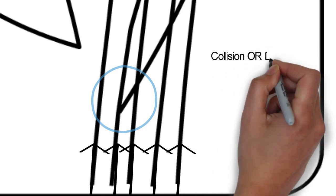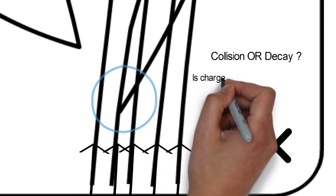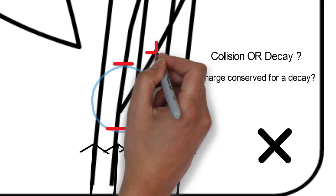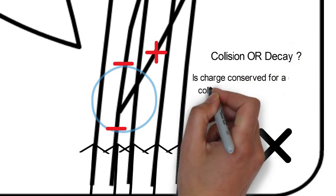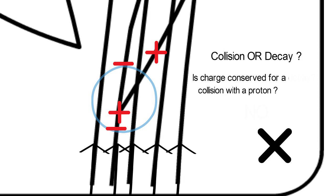Now let's look right here — something's happening. It could be one of two options: the kaon decayed into a bunch of other particles, since kaons don't last very long, or it collided with one of the protons inside the bubble chamber. Let's look at charge conservation. If it decayed, a negative particle would decay into two tracks — one curving right, one curving left — meaning a negative and a positive. This breaks charge conservation. But if it collided with a proton, a negative and a positive collide and produce a negative and a positive — yes, charge is conserved. So we have a collision with a proton.